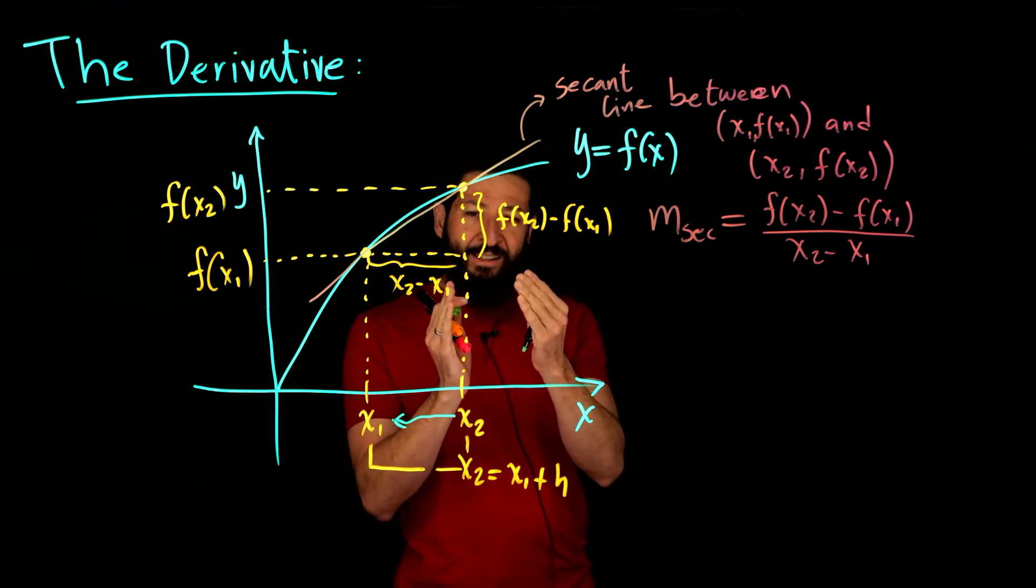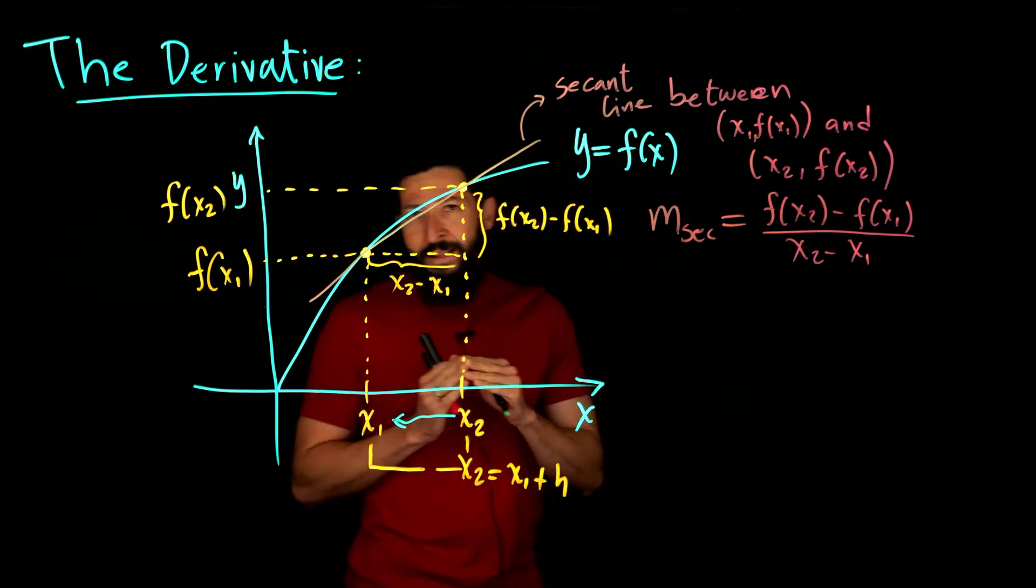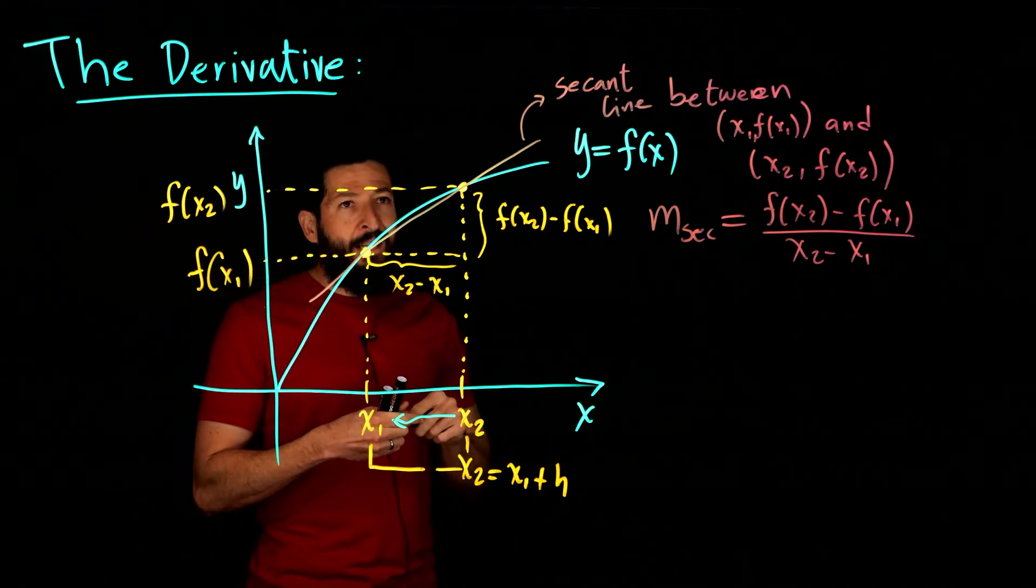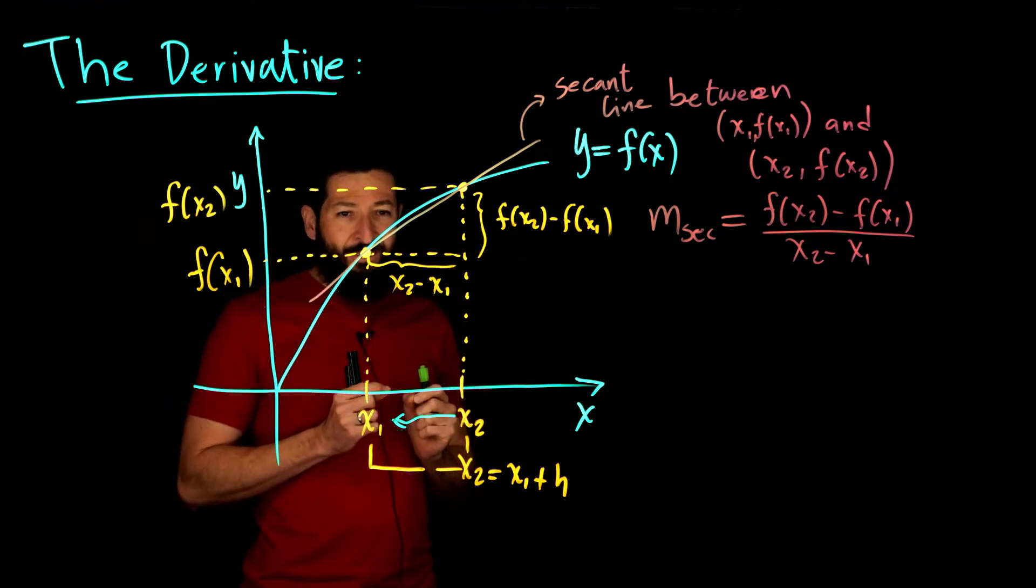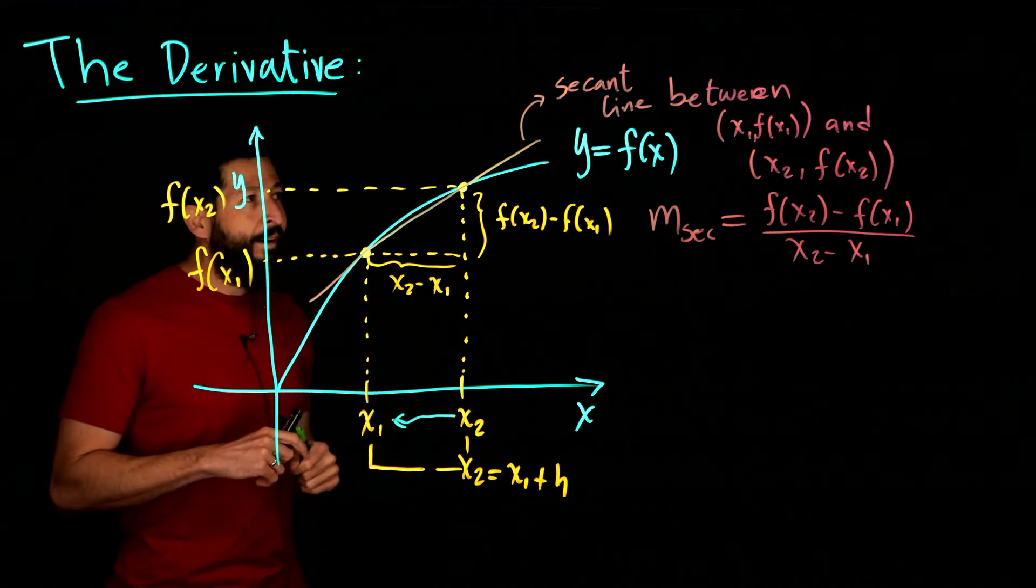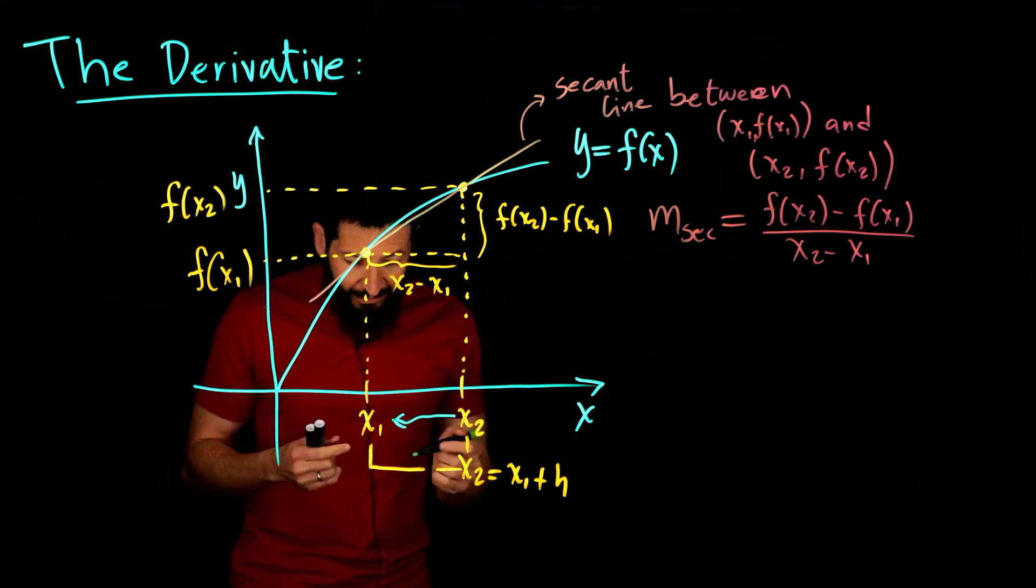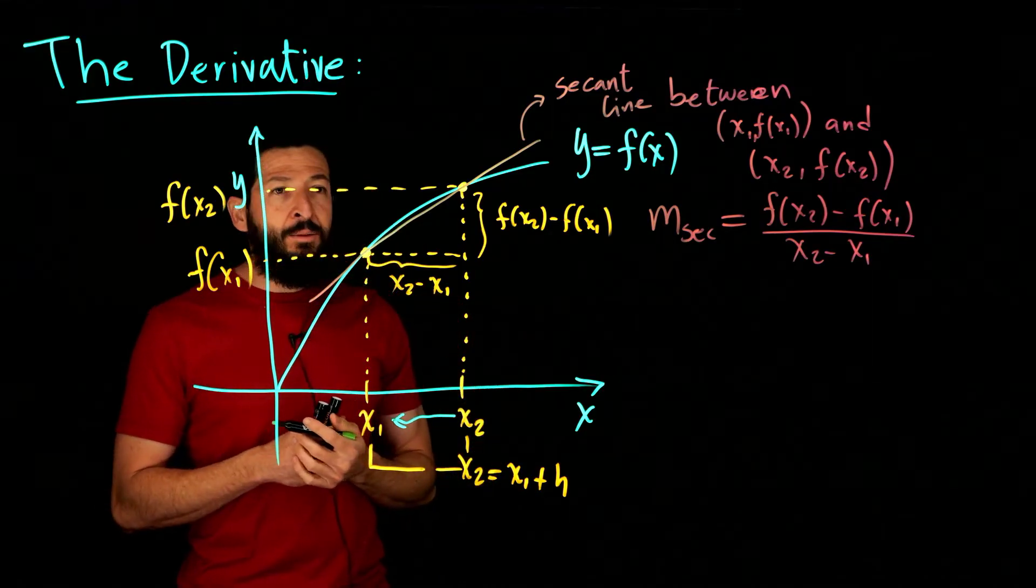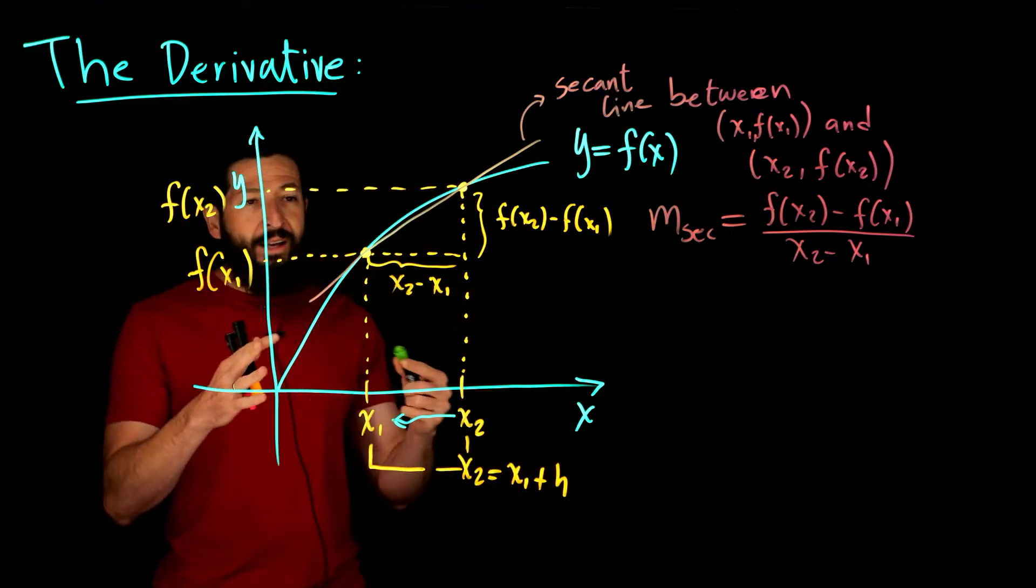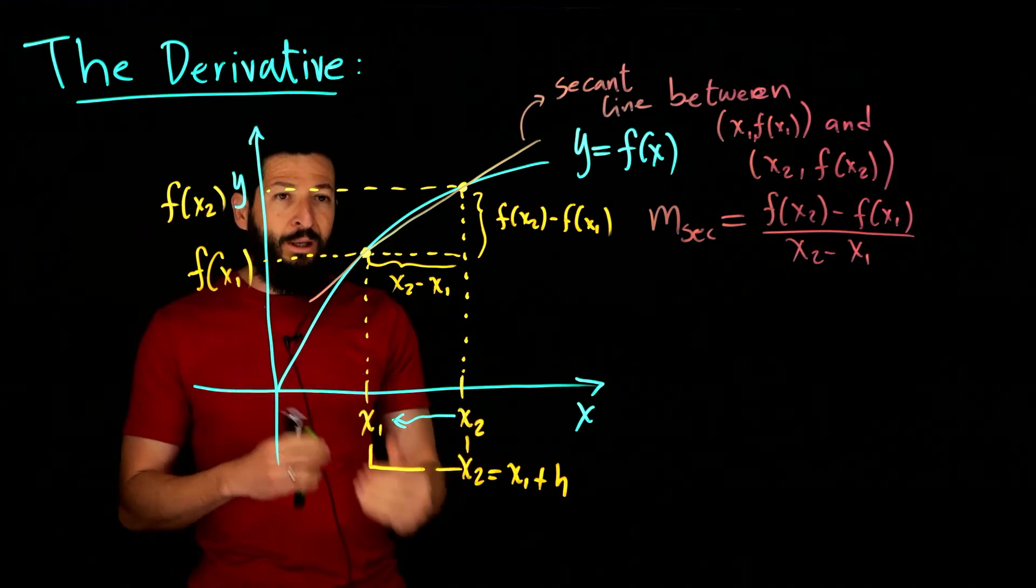The way that they went about this was slightly different. Newton had the idea of some ghost quantities, which would be our h as a little quantity. Then Leibniz had the infinitesimals that he was working with. What we work with nowadays is taking a limit. Let's see graphically what would happen if we start letting our x2 get closer and closer to x1.